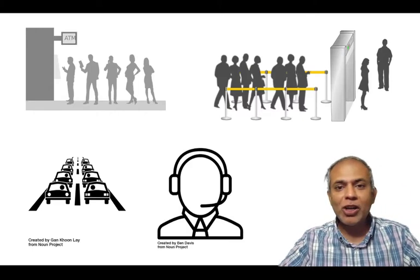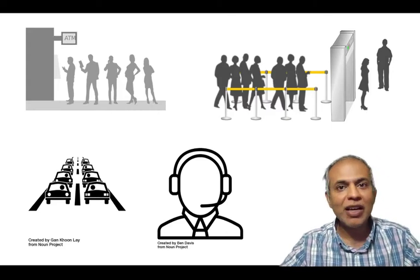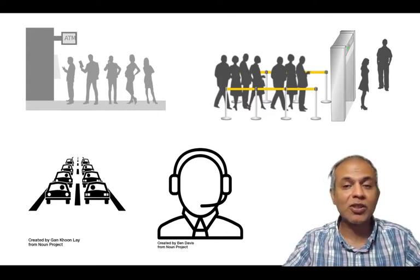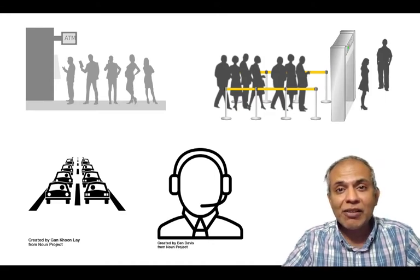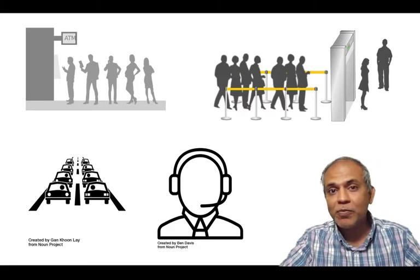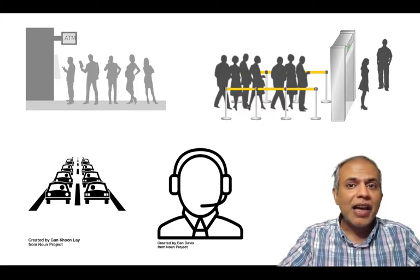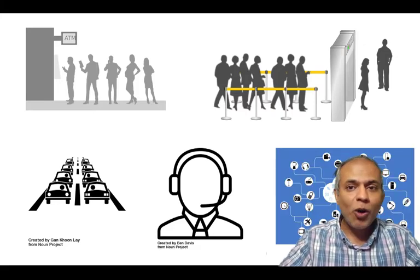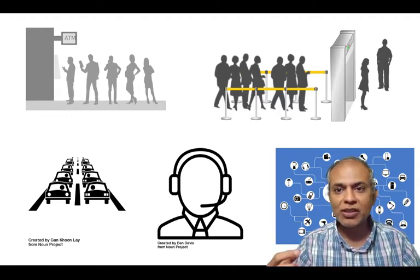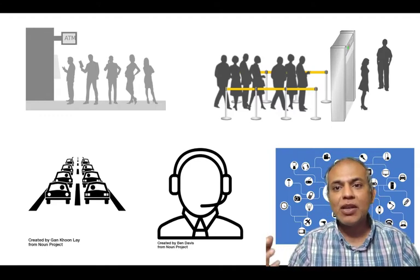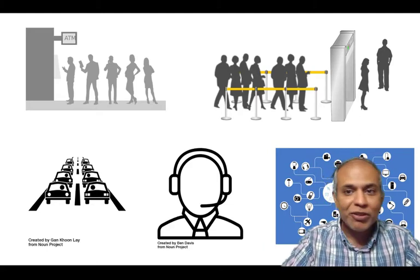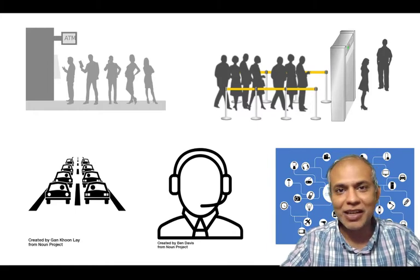When we call a help desk to get some help on a computer issue, or some equipment that we purchased, or a credit card, the waiting to get to speak to a customer agent is part of waiting lines. And even when we talk of all the online information moving around through routers and networks, the information sometimes has an overload and has to wait at a particular router. So the waiting of information is also a waiting line situation.